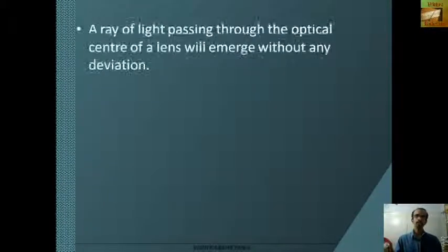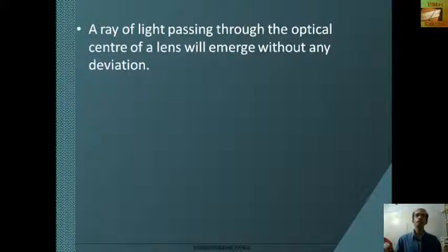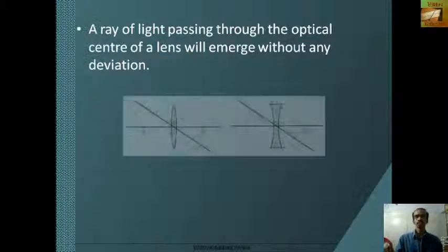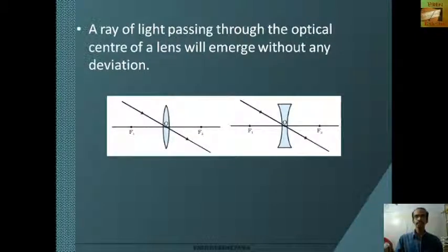The third point is: a ray of light passing through the optical center of the lens will emerge without any deviation — that is, it goes straight through, as shown in this figure.